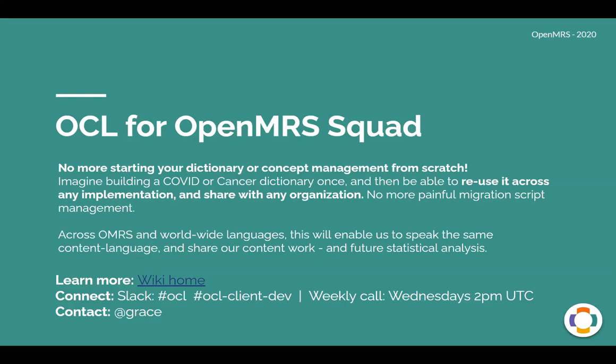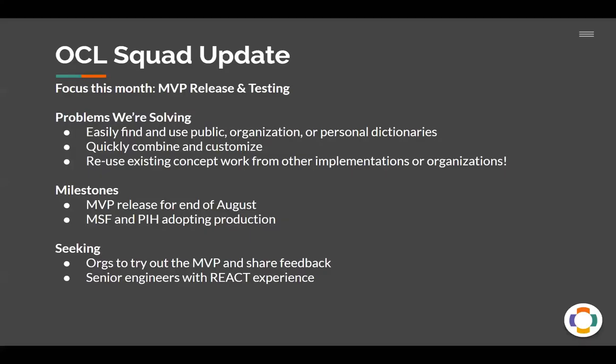Reach out to me if you have any questions. The key things to know about what we've been working on this month: our focus has been preparing for a release of a new MVP minimum viable product that tries to accomplish the goals I mentioned earlier. We've been testing this heavily. The problems that we're trying to solve is to make it easy to find and use public organization or personal dictionaries. You want to be able to quickly combine and customize concepts from any of those, and you want to be able to reuse existing concept work from other implementations and organizations. Our milestones in the squad — we're working hard towards an MVP release for the end of this month, and the goal at first is to support our partners MSF and PIH in adopting the product in production.